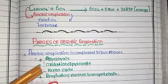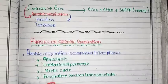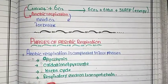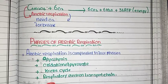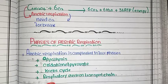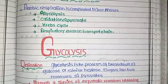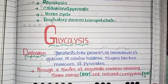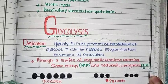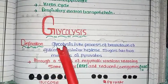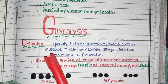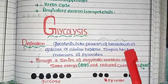We will study the other three phases in a different video. Today our topic is glycolysis. First we will see the definition of glycolysis, then the structure, and then the theory. Glycolysis is the process of breakdown of glucose — a six-carbon sugar — into two molecules of pyruvate.